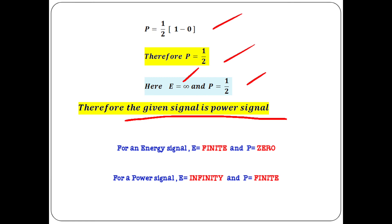To summarize: for an energy signal, energy should be finite and power should be 0. For a power signal, energy should be infinity and power should be a finite value. Hope you understood all the problems. Thank you for watching.